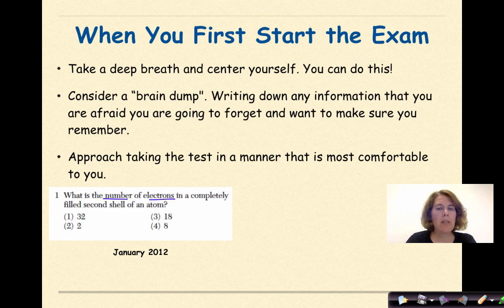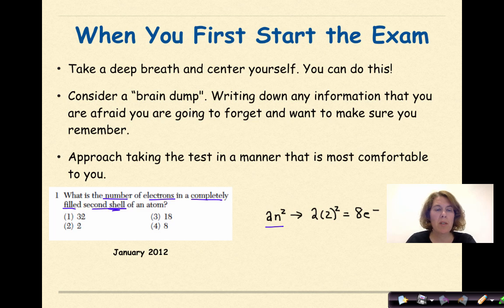What is the number of electrons in a completely filled second shell of an atom? What formula would you use for this? A formula that is not on your reference table, but you need to know, is the 2n squared formula. So if we take the number 2, because they're talking about the second shell here, and we substitute the 2 in right here, 2 squared is 4 times 2 is 8. So the maximum number of electrons in the second shell is 8 electrons, which is the correct answer for this question.